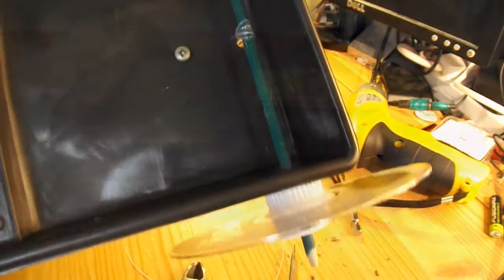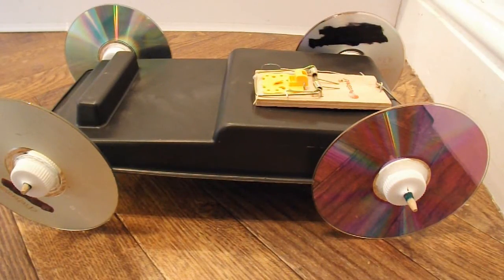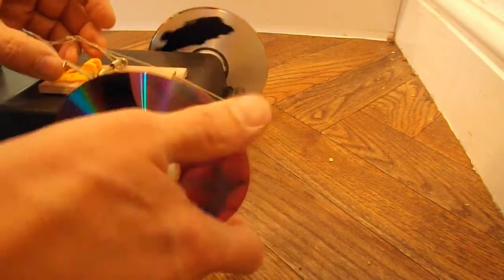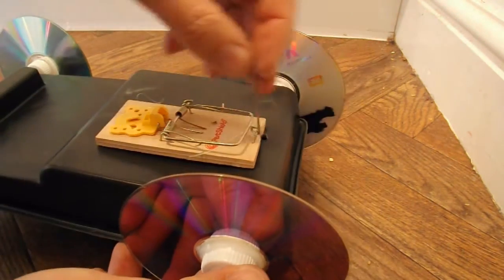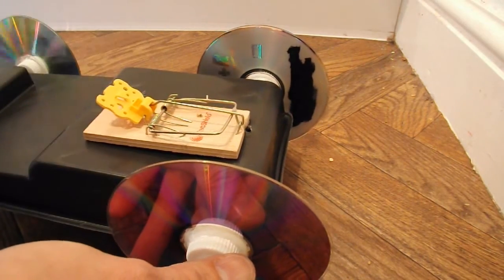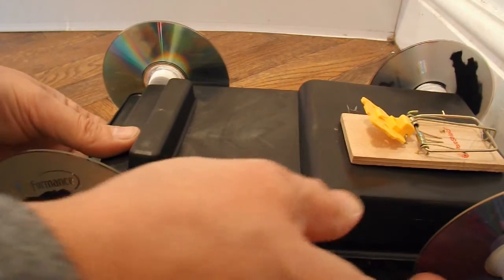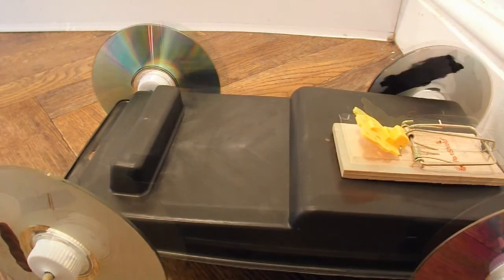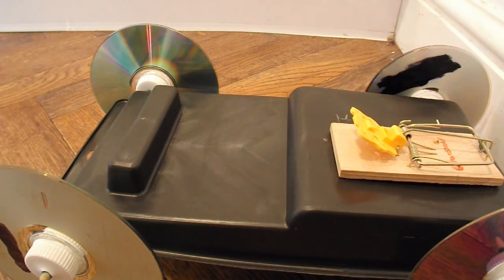So, another test run time. Right, let's test run the mousetrap. Put the trigger in place. Pushing it against the back wall. So, we may well get some wheel spin this time. Because the mousetrap's going to be more powerful initially.